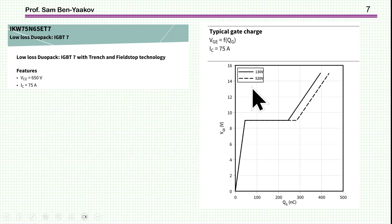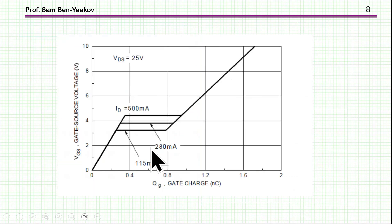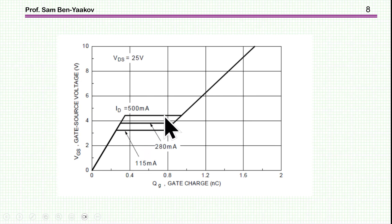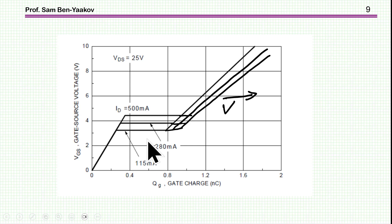A larger voltage swing means the plateau will be longer in terms of the amount of charge. There is also a sensitivity to the current. Looking at the MOSFET data sheet, for different currents, the plateau is at a different level. So in fact, we have a family of plots, not just one — the actual plot you will be working with depends on both the current and the drain-to-source voltage.